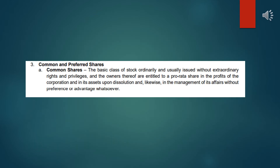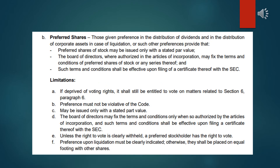The next type of share is common and preferred shares. Common shares are the basic class of stock ordinarily issued without extraordinary rights and privileges. The owner shares in the profits of the corporation on a pro-rata basis and in its assets upon dissolution, likewise in the management of its affairs, without preference or advantage whatsoever. It is a basic class of stock compared to preferred shares.